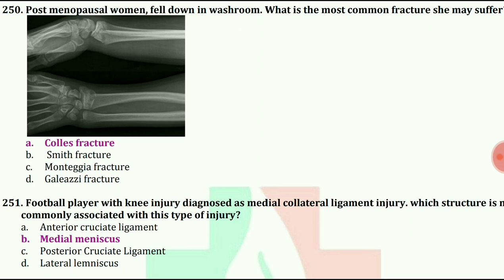Football player with knee injury diagnosed as medial collateral ligament injury. Which structure is most commonly associated with this type of injury? The answer is medial meniscus.